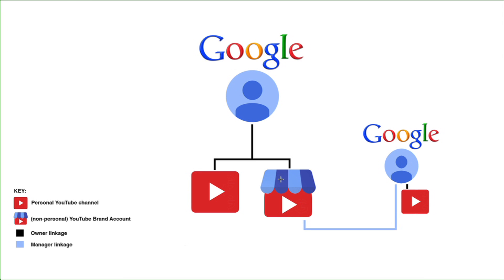Now, the thing with YouTube brand accounts is that they don't have to be owned only by your Google account. They can be owned or co-owned by additional Google accounts. So another party here has their own personal YouTube channel, but also manages this particular YouTube brand account of yours. You own it — the black link is an ownership link — and this other person is actually only managing it. It's really important to understand that these two Google accounts are not associated with each other in any way other than that they share some sort of access over what is a YouTube brand account.